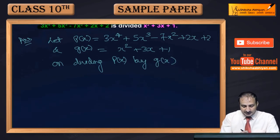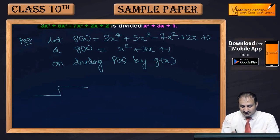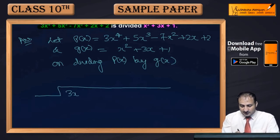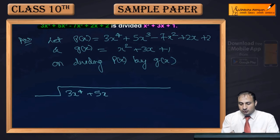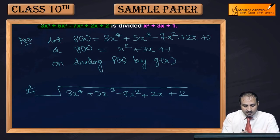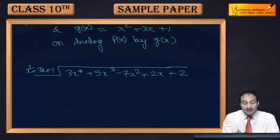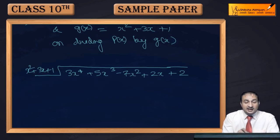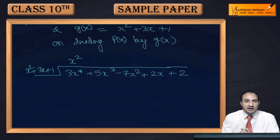We set up the long division: 3x⁴ + 5x³ - 7x² + 2x + 2 divided by x² + 3x + 1. First, look at the highest degree term of the dividend, which is x⁴, and the divisor's highest degree term is x². To get x⁴ from x², you multiply by x², and since the coefficient is 3, we also multiply by 3.